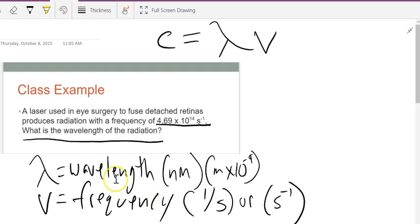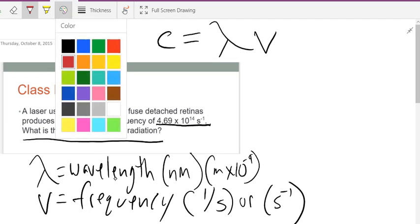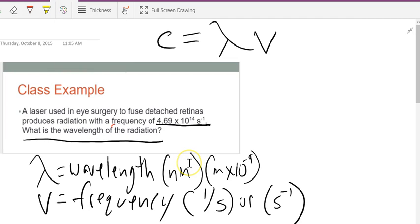Now, in this case, we are given, you're always going to be given one of them. Which one are we given here? We're given frequency, right?